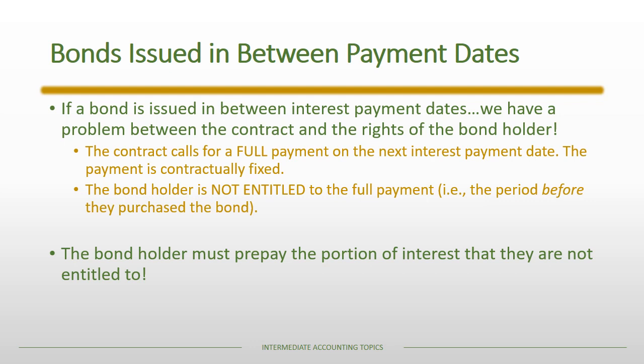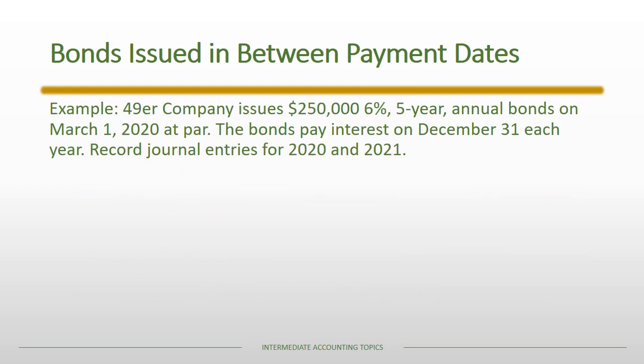The bondholder must prepay the portion of interest that they are not entitled to. Because of the timing, in a very strict sense the bond yield will take the prepayment into account — usually it's some small adjustment — but from our perspective we're always going to have that already taken into account as we walk through an example.